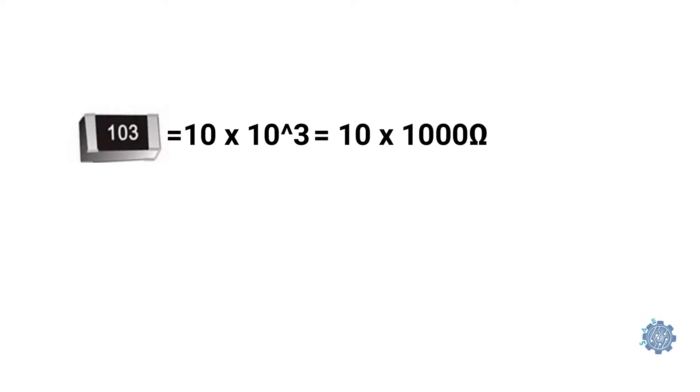For example, 103 is equal to 10 multiplied with 10 to the third power, which is further equal to 10 multiplied with 1000, which means 10 kilo ohms. And 391 is equal to 39 multiplied with 10, which means 390 ohms.